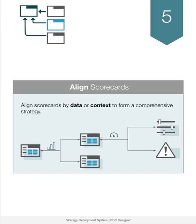Step 5: Connecting the scorecards. In this step, we need to connect scorecards to show how they relate to each other. Some connections will follow the hierarchical structure defined in the cascading step, while others will show the cross-functional logic between scorecards. Some scorecards can be connected by data, where the results of lower-level scorecards serve as inputs to higher-level scorecards. Others can be connected by context, showing how the goals in one scorecard relate to objectives in another. On our platform, connecting scorecards is as easy as copying and pasting goals between scorecards.